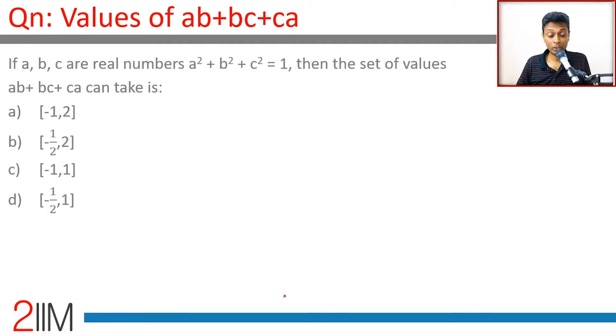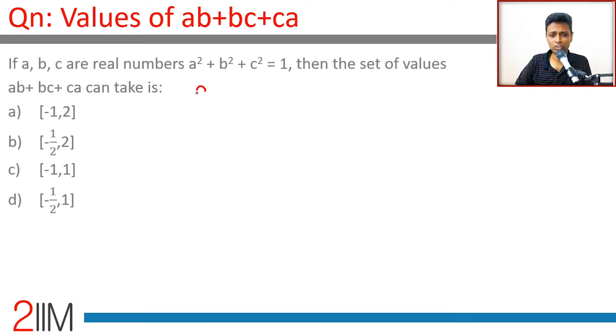If a, b, c are real numbers and a² + b² + c² = 1, then what is the set of values that ab + bc + ca can take?